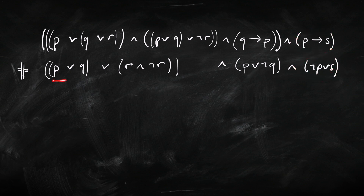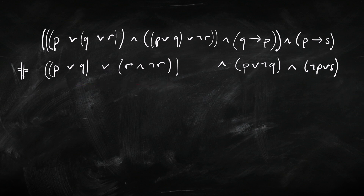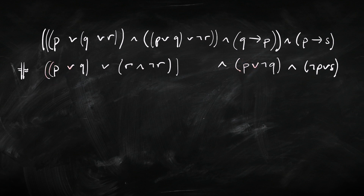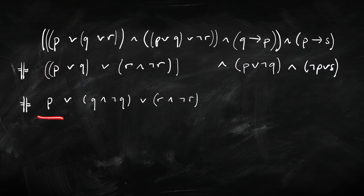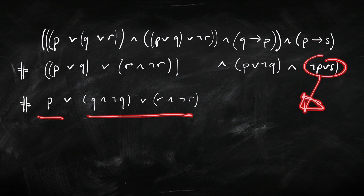Now we have a disjunct, disjunct, disjunct. Because of associativity, those brackets don't really matter, so we could view it as P or all of this together. One conjunct has a P, and another conjunct has P as a disjunct, so we can use the distribution rule again to factor out that commonality — the P here and the P there. That gives us P or all of the rest, and the remaining bit goes inside.